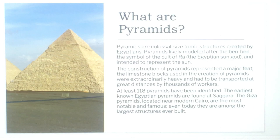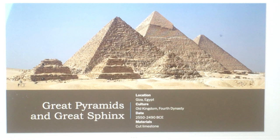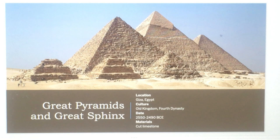At least 18 or 118 pyramids have been identified. The earliest known Egyptian pyramids were found at Saqqara. The Giza pyramids, located near modern Cairo, are the most notable and famous — even today they are among the largest structures ever built. The location is Giza, Egypt, Old Kingdom, Fourth Dynasty, 2550 to 2490 BCE, and the materials are cut limestone.